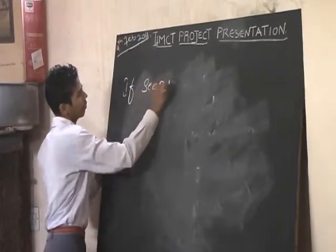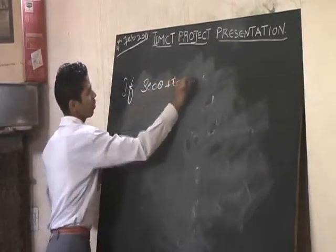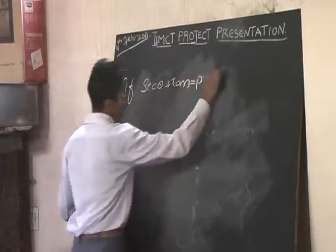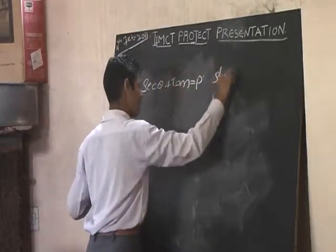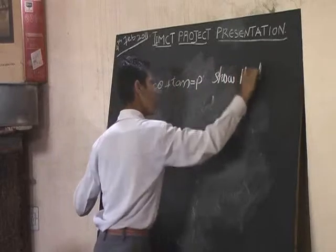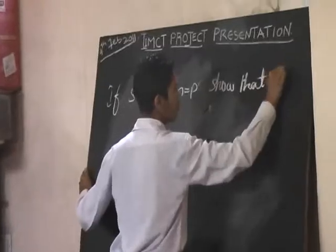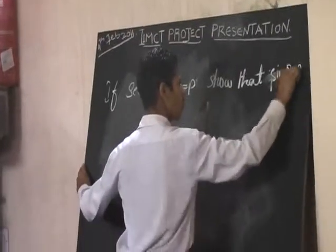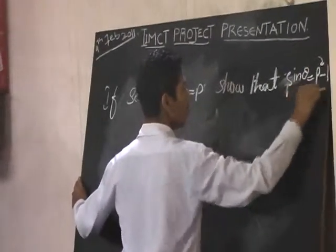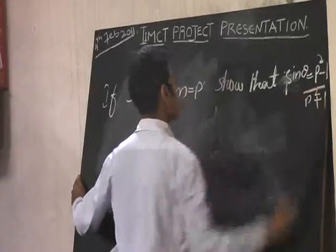If sec theta plus tan theta equals P, show that sine theta equals P squared minus 1 divided by P squared plus 1. First of all, write the given.